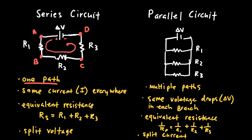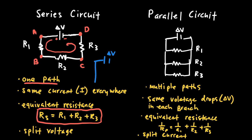To find the equivalent resistance of a series circuit, simply add up all the resistor values. This is important because to find the current in the circuit you need the total resistance. If you know the battery voltage and the individual resistor values, add up all resistances, draw a simplified circuit with the equivalent resistance, and then use Ohm's law to calculate the current in that loop — which gives you the current in the more complicated circuit.